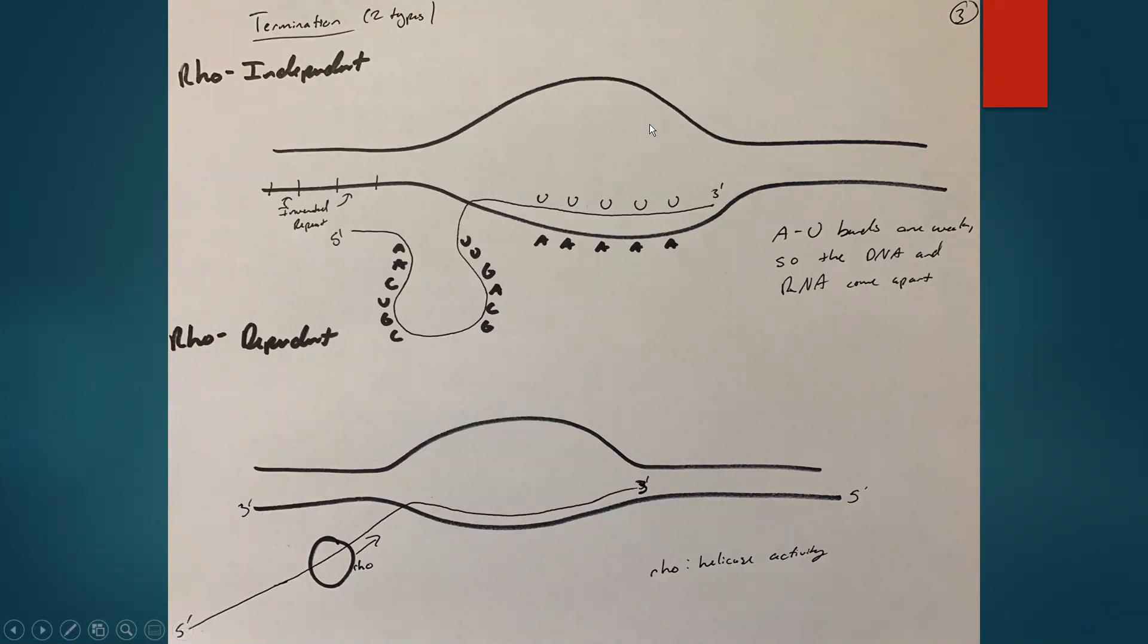Lastly, there's termination. There are two types. The first is Rho independent, so RNA reading this way will read these two inverted repeats, which cause this hairpin formation. As you can see, these all bind together because uracil is the replacement for thymine in RNA. After this hairpin, there's usually a string of adenines which codes a string of uracils. These AU bonds are very weak, causing the DNA and RNA strands to disassociate from each other, terminating transcription.